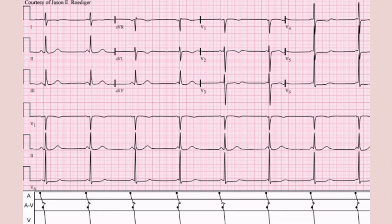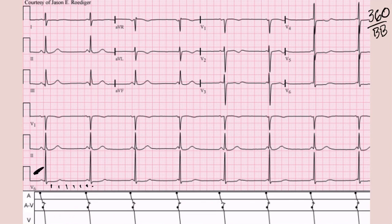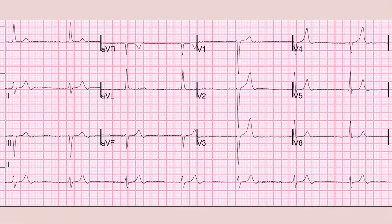So if you count about six and a half big blocks between QRS complexes, it's bradycardia because 360 divided by 6 is 60. Here you can see a more severe example — counting seven to seven and a half big blocks puts the rate in the low fifties to high forties. This is a junctional bradycardia, and we know this because there are abnormalities to the P waves.